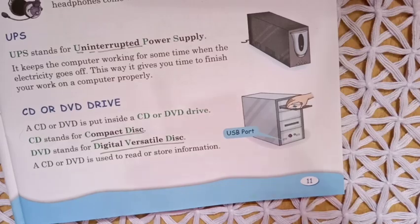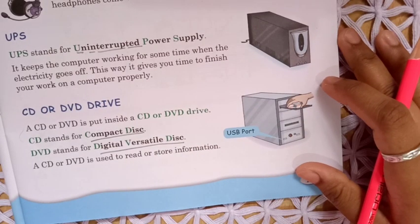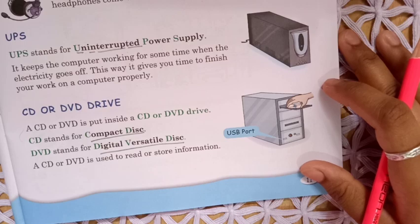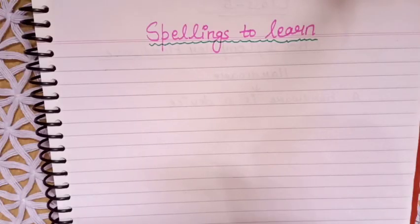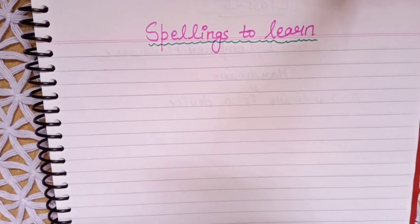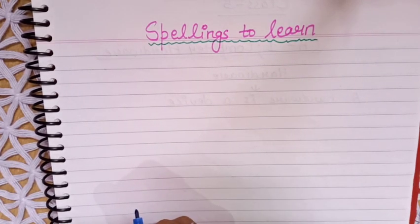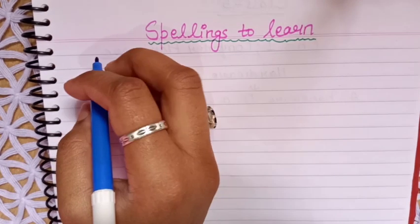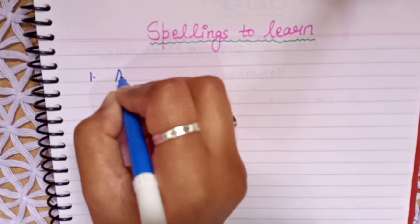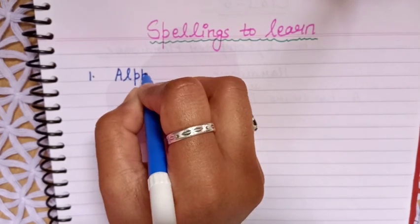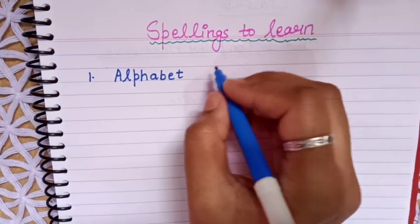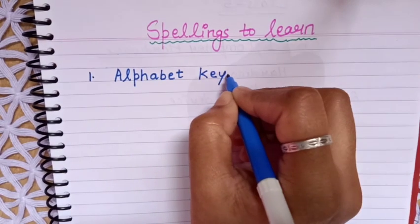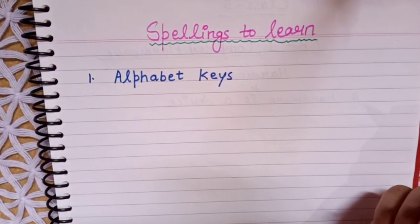Now the reading part of chapter 2 is completed. I am going to give you some important spellings which you need to learn and write in your copy. The first spelling is Alphabet Keys: A-L-P-H-A-B-E-T, K-E-Y-S.